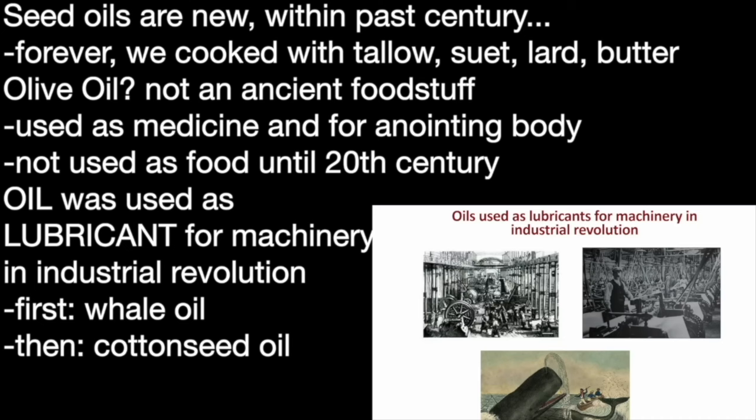What oils used to be used for was as a lubricant for machinery in the Industrial Revolution. One of the main reasons that we hunted whales was to get whale oil. The oil from whales was the main product we got from them, and it was used to lubricate the vast and growing amount of machinery that was fueling the Industrial Revolution.